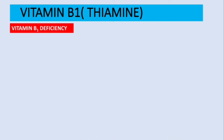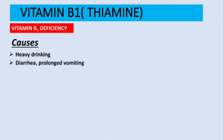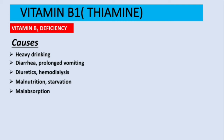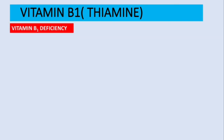Now let's talk about vitamin B1 deficiency. The number one cause is heavy drinking — chronic alcoholics suffer from vitamin B1 deficiency. Other causes include diarrhea, prolonged vomiting, diuretics, hemodialysis, malnutrition, starvation, and some malabsorption syndromes. Remember the main cause is heavy drinking.